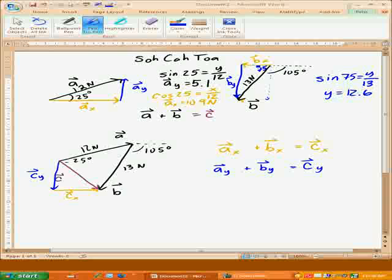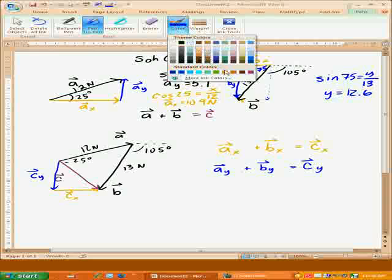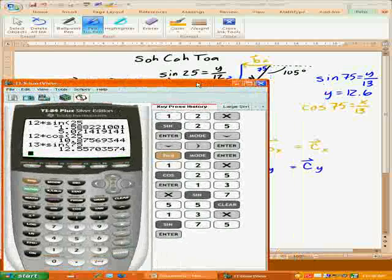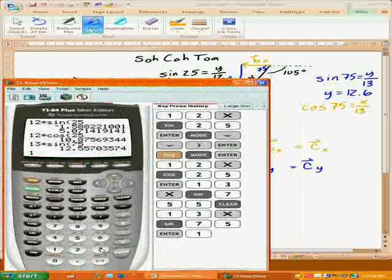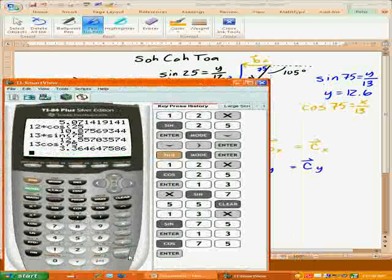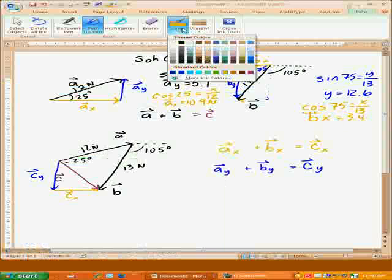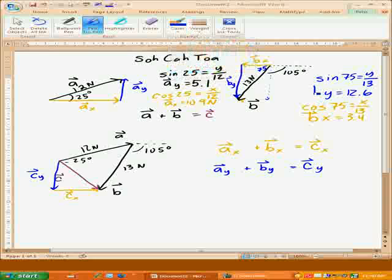And then we'll do the same thing with the X, and so we'll do cosine of 75. We'll give you the adjacent over the hypotenuse, so we'll do the same thing again, except this time we'll do 13 cosine of 75, which is going to give me 3.4. So now I've got X equals 3.4, and of course this is B in the X direction, and this other one was B in the Y direction.